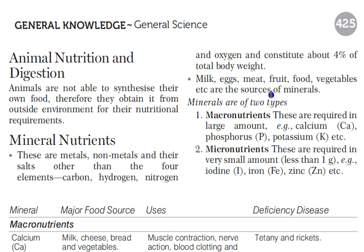Milk, eggs, meat, fruits, and vegetables are the main sources of minerals. Examples of minerals include calcium, potassium, and phosphorus.